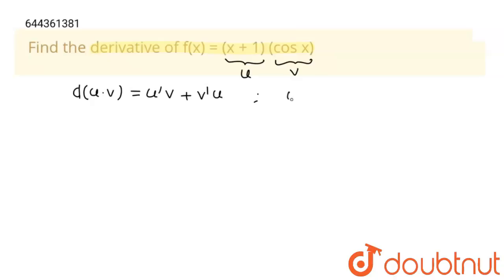So differentiation of u into v is written as u dash v plus v dash u. So what is u? u is our x plus 1. And what is v? v is equal to cos x.